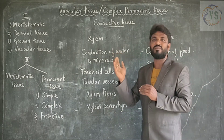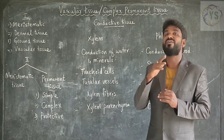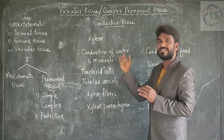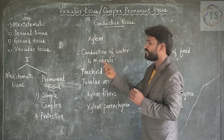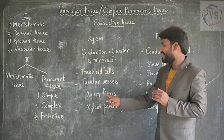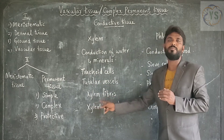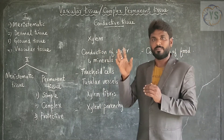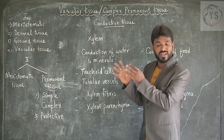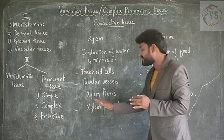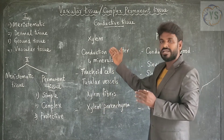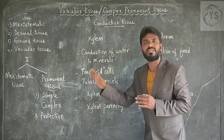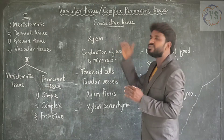All the cells in xylem are not the same — they are of different forms and different kinds. Xylem contains tracheid cells, tubular vessels, xylem fibres, and xylem parenchyma. All these cells are non-living except xylem parenchyma. Only xylem parenchyma has living cells; all remaining cells are non-living.